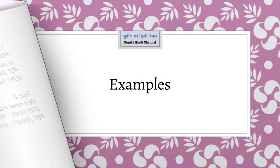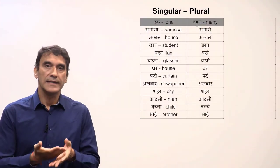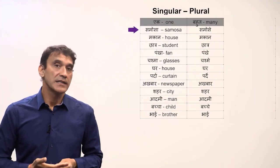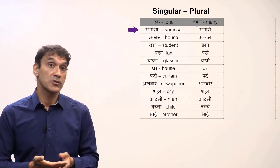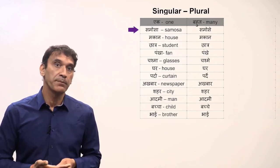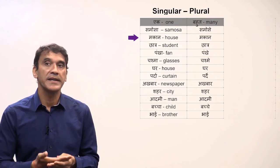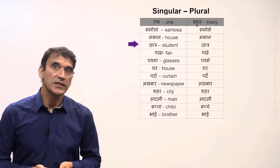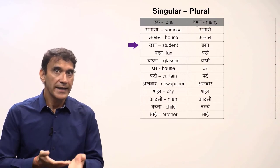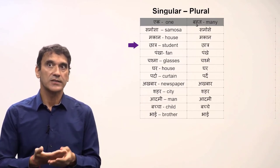Let's take some examples. 'Samosa' — the plural is 'samose'; the noun ends in 'a' so it becomes 'e' in plural. 'Makaan' meaning 'a house' does not end in 'a', so it stays the same — 'makaan' for houses. 'Chhaatra' meaning 'student' does not end in 'a', so it stays the same — 'chhaatra' for students.